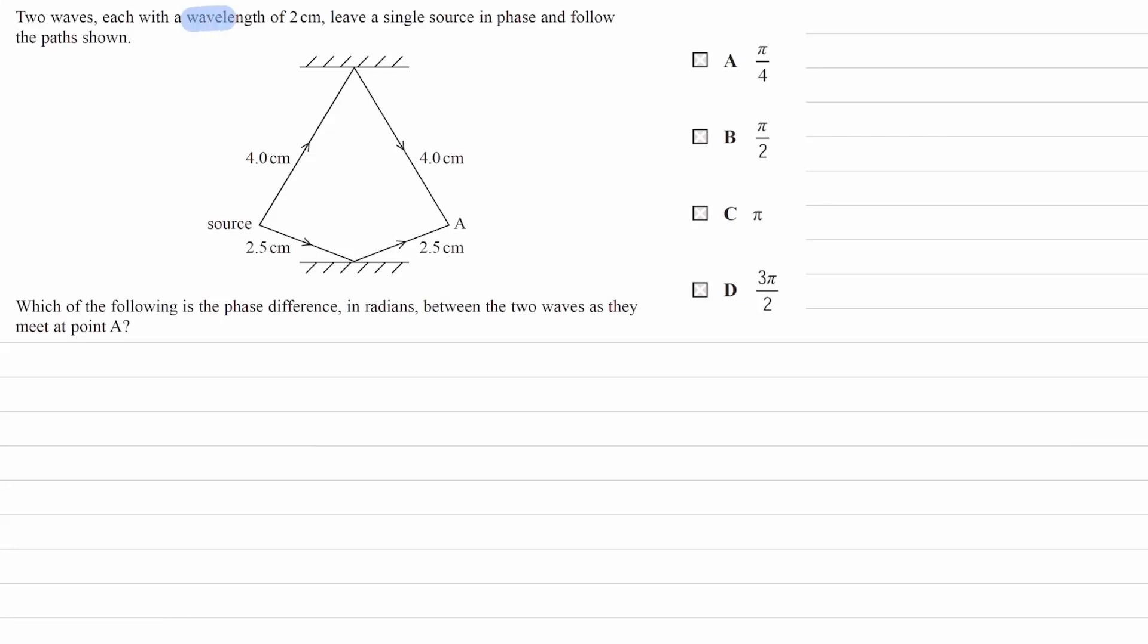Two waves, each with a wavelength of 2 cm, leave a single source in phase and follow the path shown. Which of the following is the phase difference in radians between the two waves as they meet at point A?